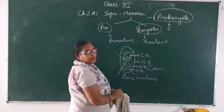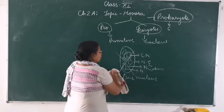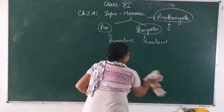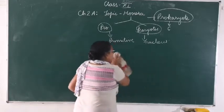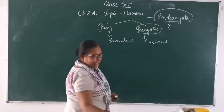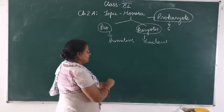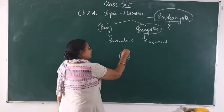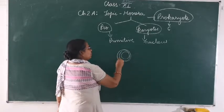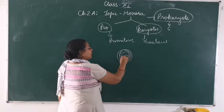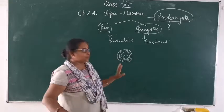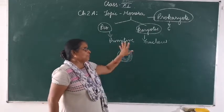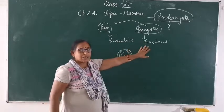This membrane is not present at all. So in this case we will see the naked DNA arranged in a circular manner, in a very circular manner without any nuclear envelope. So this is what we mean by the primitive nucleus.